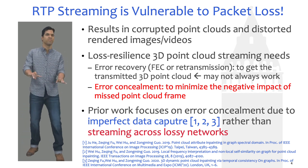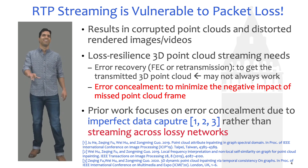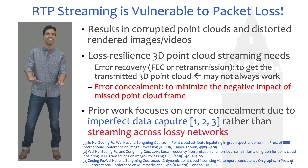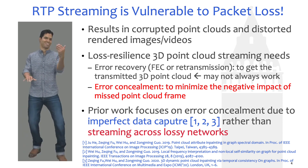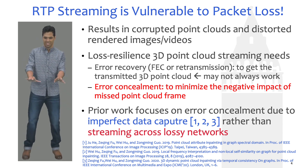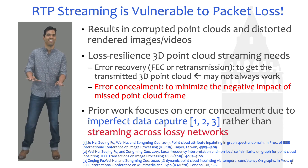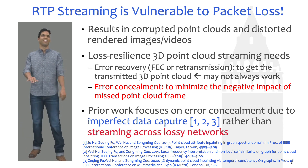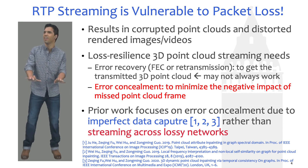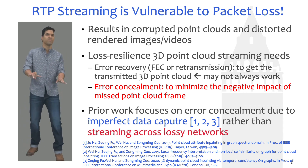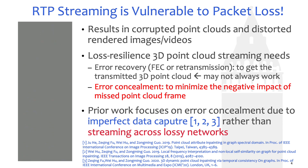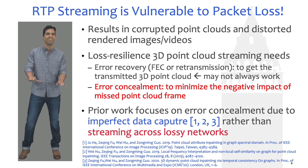However, RTP streaming is vulnerable to packet loss. On the left, we show a reconstructed 3D point cloud sequence under 5% packet loss rate. You can observe missing point cloud frames and distortion in terms of geometry and color. One way to solve this problem is to apply error recovery mechanisms, such as forward error correction or retransmission. But error recovery may not always work, and the receiver may need to perform error concealment to reduce the negative impact due to missing points.